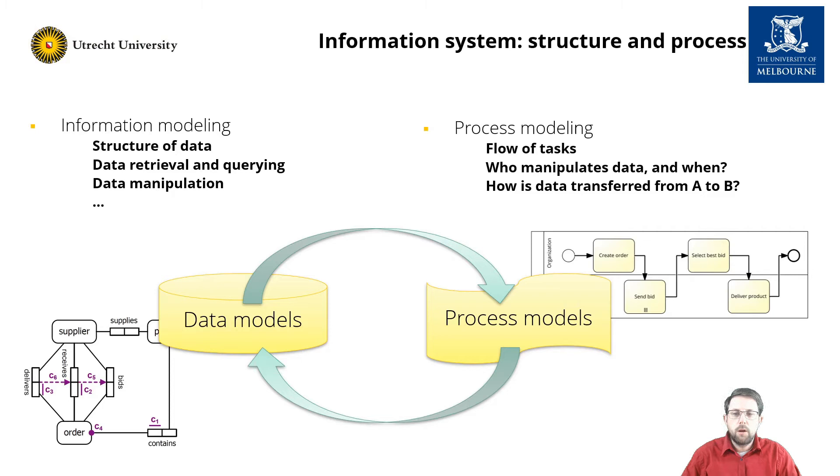For information systems, we often divide the specification into two parts. There is the structural part that focuses on modeling the entities and their relations, and how these can be retrieved, queried, and manipulated. Well-known examples include entity relationship models and the object role modeling notation.